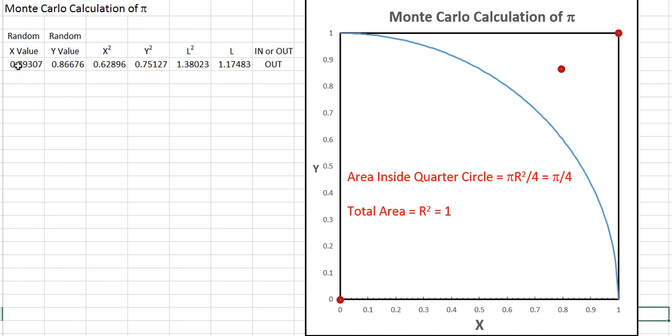To do this, I simply took a random number of x between 0 and 1, same for y. I computed x squared and y squared, and l squared, which is the distance from the origin to the point, and l.